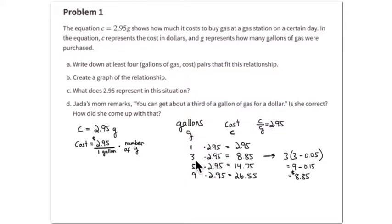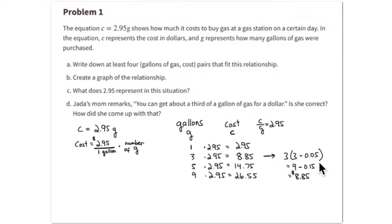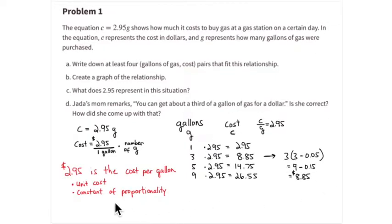This is using the distributive property to calculate three times two dollars and ninety-five cents mentally. It's hard to multiply three times ninety-five directly, but it's much easier to see it as three times three dollars minus three times five cents. So three times three is nine dollars, and you take off fifteen cents, giving eight dollars and eighty-five cents. Two dollars and ninety-five cents is the cost per gallon — that is the unit cost, the constant of proportionality.